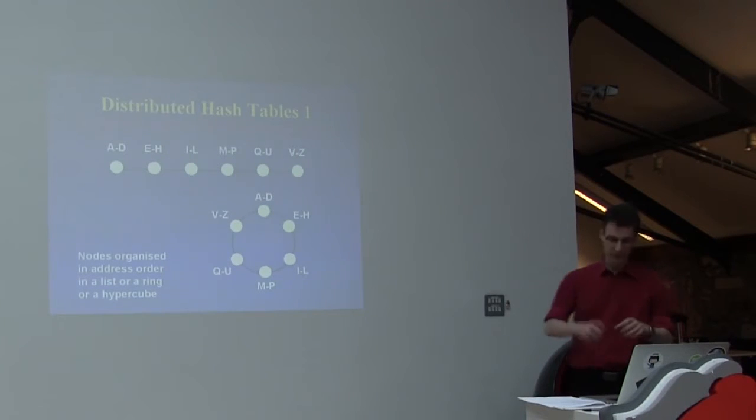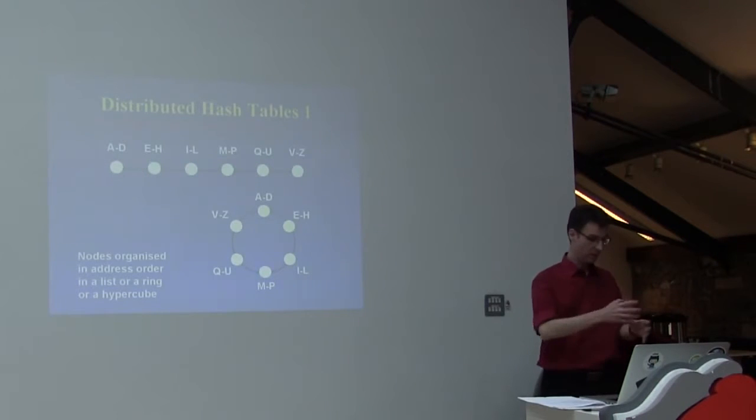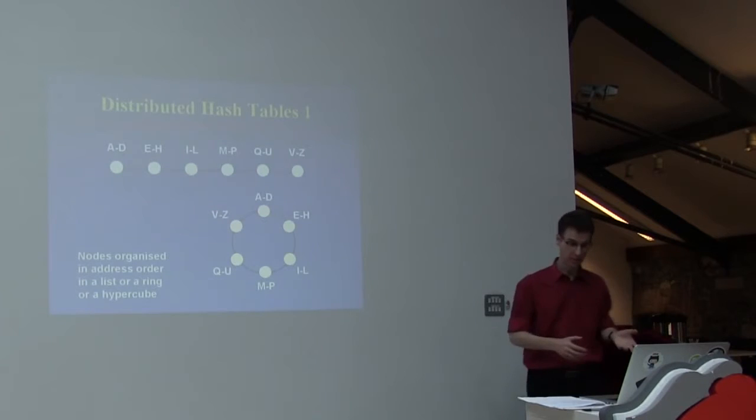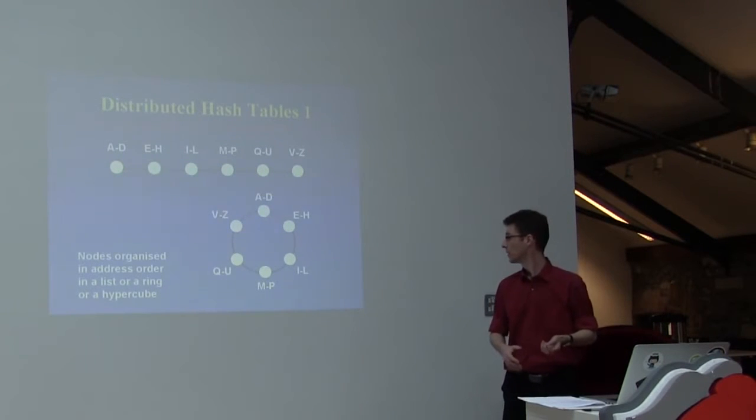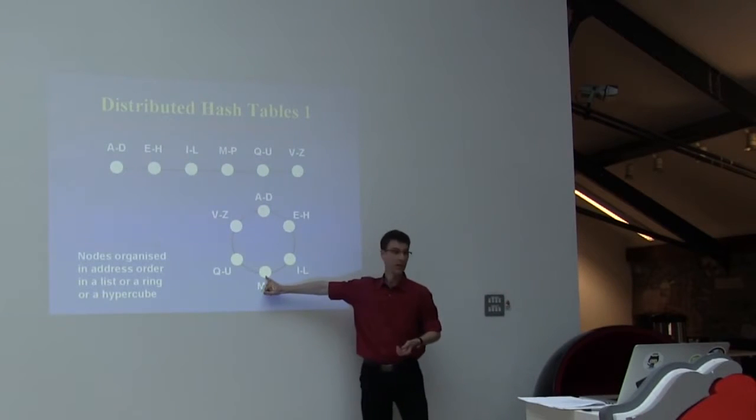Basically, we connect all the nodes. Each node gets an address, and then we connect them in a big ring. And when we publish a piece of data, for instance, a movie—that's not the best example, but let's use that example. If the movie is named Motorbike...